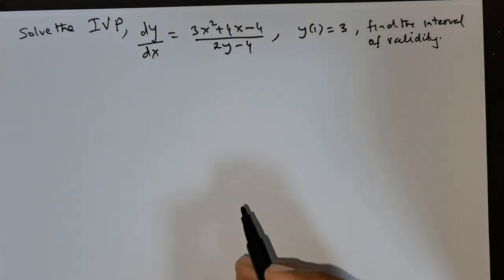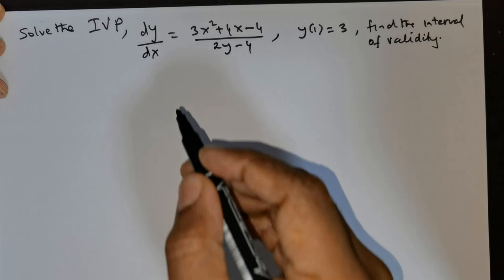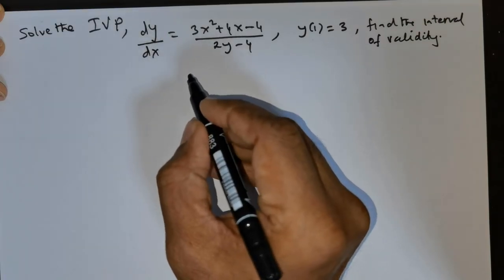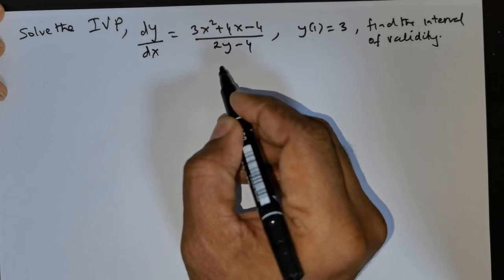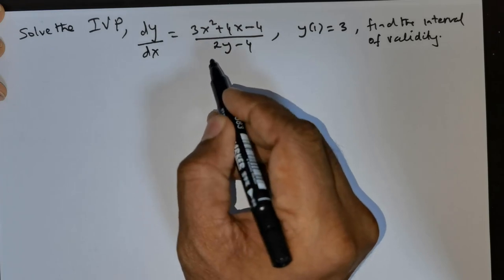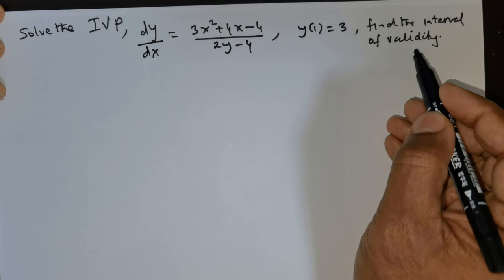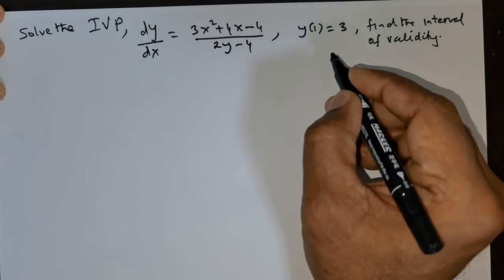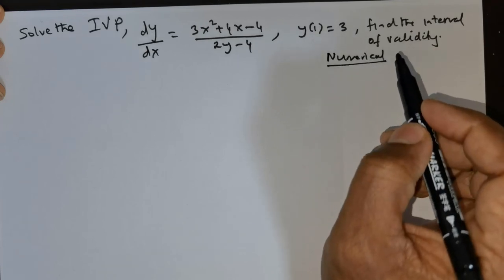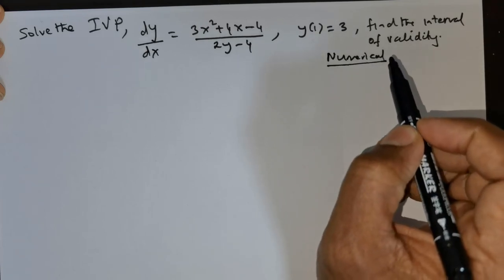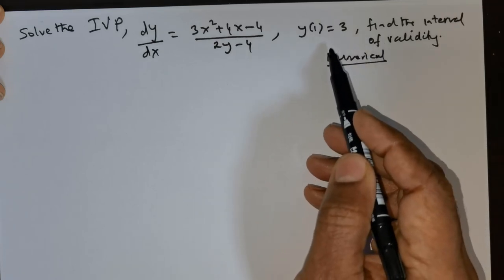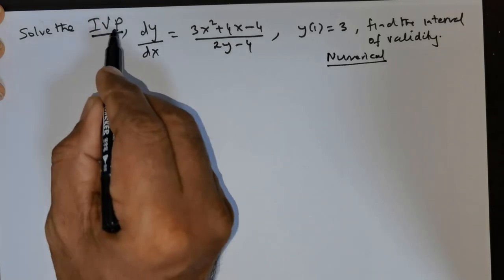Welcome everybody. In this particular question, you will learn the following. You will learn how to solve the differential equation by using the variable separable method. You will also learn how to find the validity of this interval using a numerical technique. I will be teaching you this numerical technique and demonstrate how we can use Python to get the validity for this function. IVP stands for initial value problem.